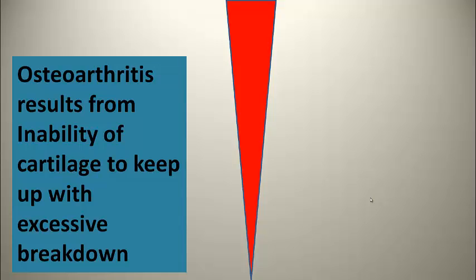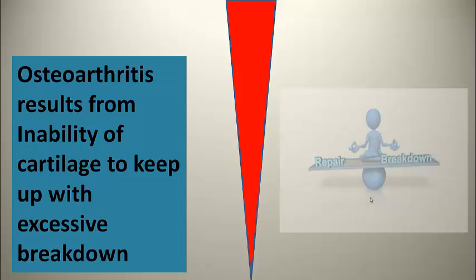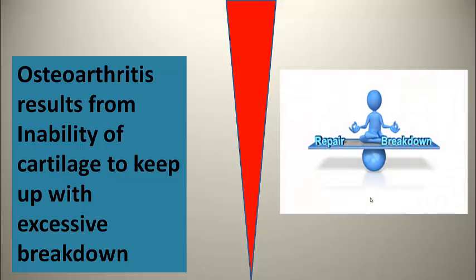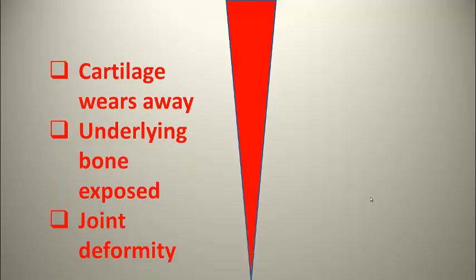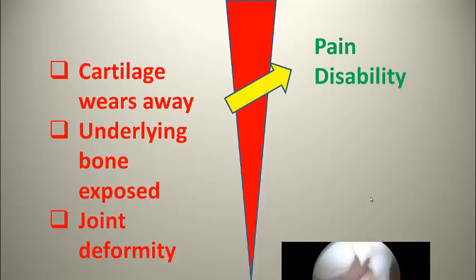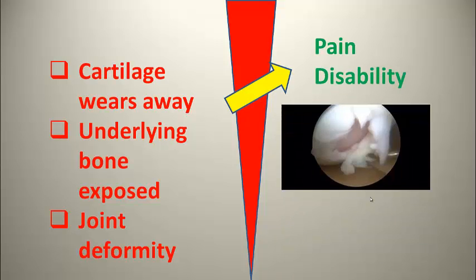Osteoarthritis occurs because there is an imbalance and cartilage can't keep up with breakdown. The end results are loss of resiliency, inflammation, and damage from destructive enzymes. Cartilage wears away, the underlying bone is exposed, and joint deformity occurs.